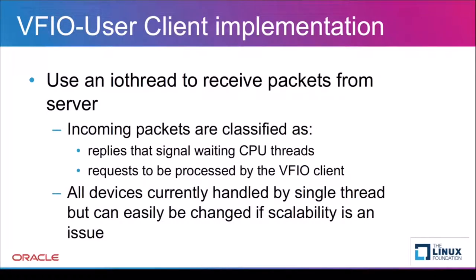VFIO user uses an IOCTL to receive messages from the server. Incoming messages are classified as replies to client requests or requests from the server. The former will signal the thread that sent the request, while the latter invokes a callback to VFIO to process the request. All devices currently use the same IOCTL, but if scalability is an issue when multiple VFIO user devices are in use, this can be changed to one IOCTL per device.